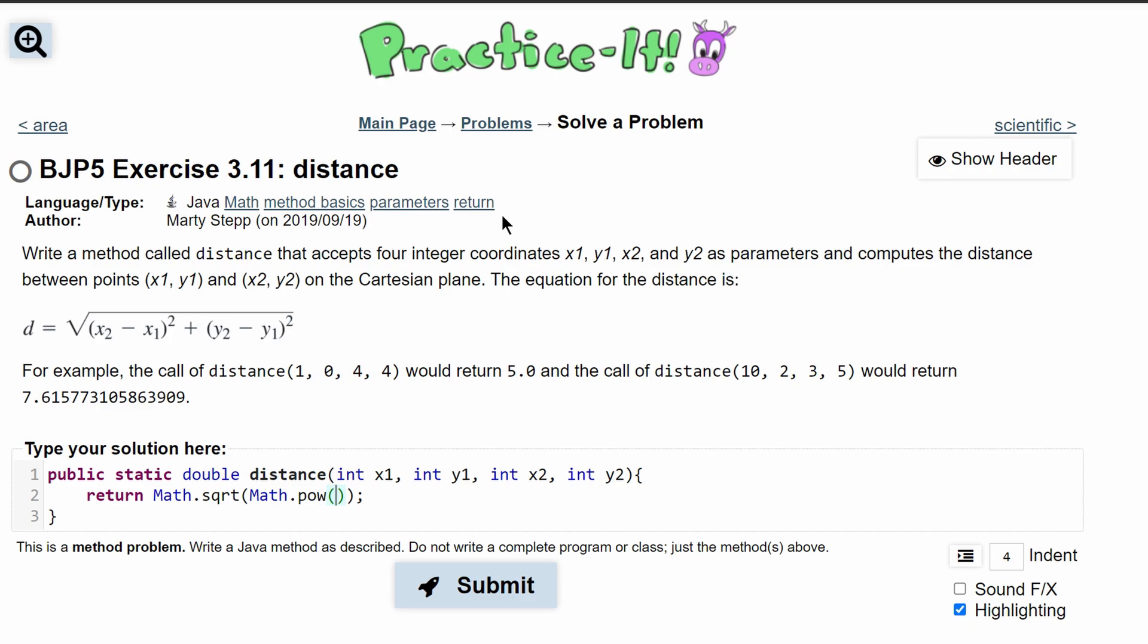In our Math.pow we are going to have our x2 minus x1 and then a 2. That way we square that result. Then we have a plus and then we're going to have something similar.